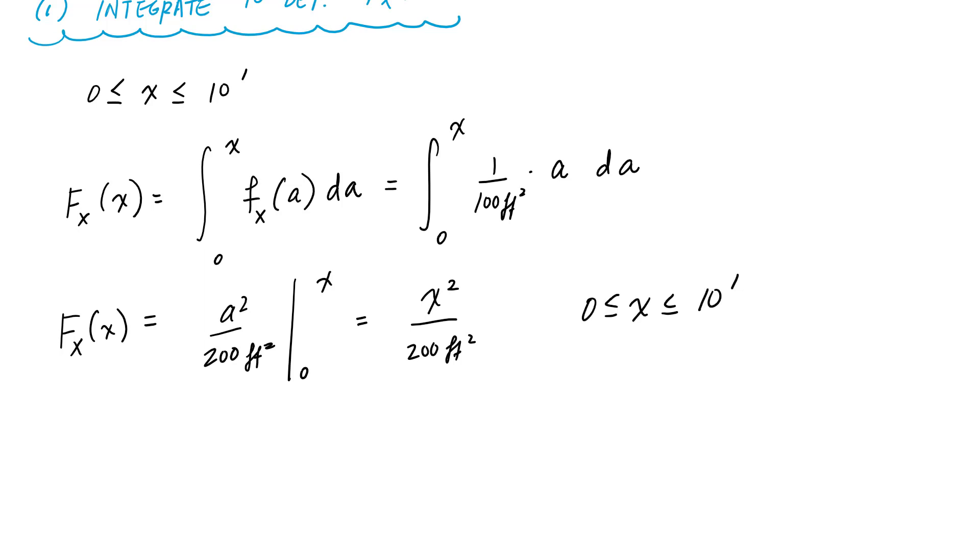And it makes sense. The PDF is linear, so an antiderivative of a line is parabolic, and so I've got here this parabolic equation x squared.